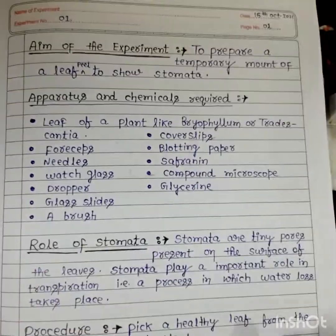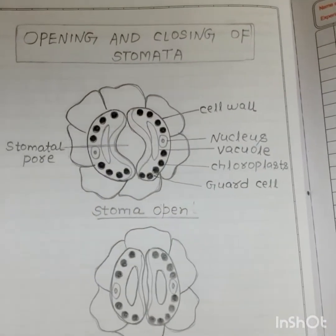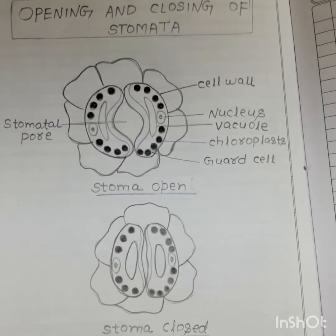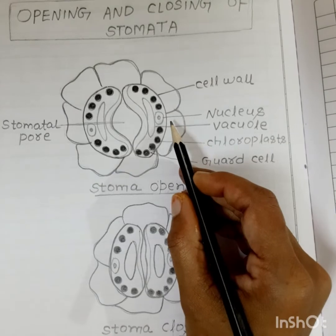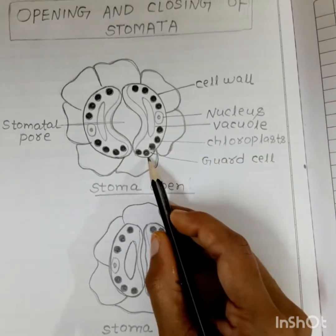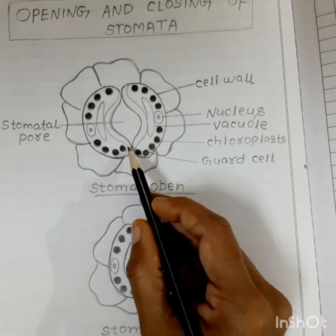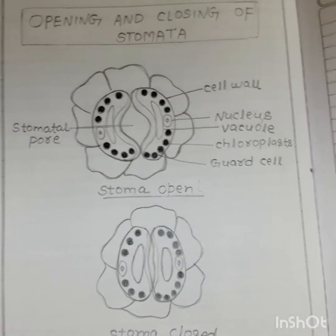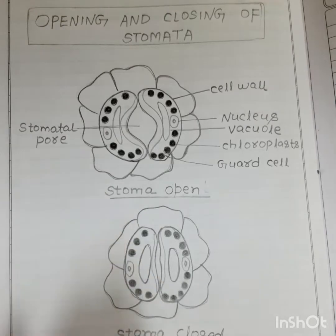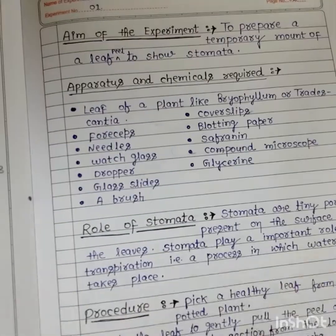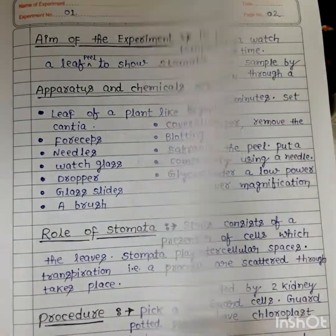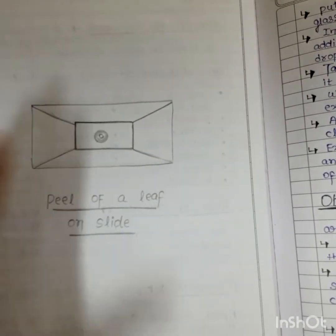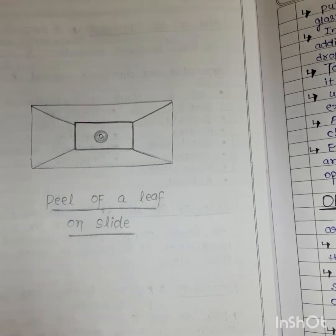Now for the diagrams: first, we have to draw the structure showing opening and closing of stomata. In the stomata structure, the parts labelled are: cell wall, nucleus, vacuoles, chloroplasts, and guard cells — which help in opening and closing of the stomata pore. In the practical notebook, on the white paper you have to draw the structure related to your experiment, and on the ruled paper you have to write the experiment. This is also a diagram showing the peel of a leaf on a slide after adding safranine solution or glycerin, which we then observe under a compound microscope.